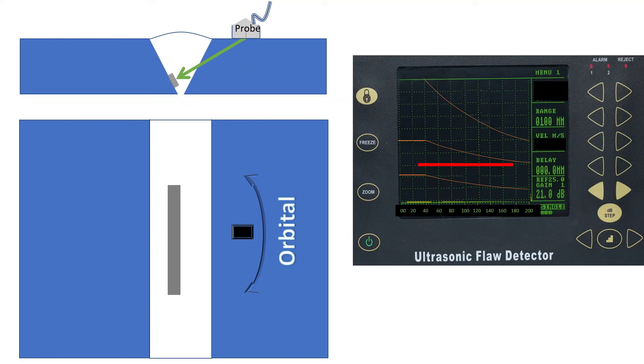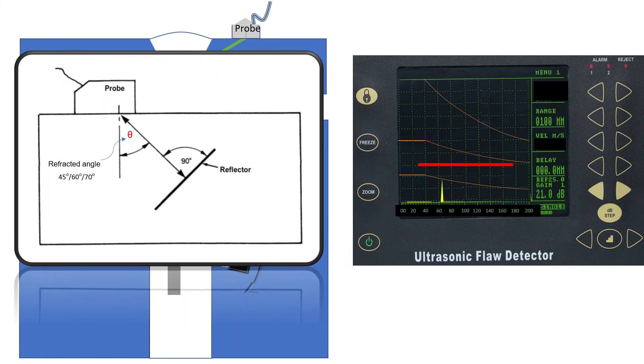The reason is that in lateral movement the sound beam remains perpendicular to the defect and amplitude held stable. However as the probe is swiveled, orbited or rotated as shown in the animation, the sound reflected angle changes and full echo response does not reach to the probe crystal. Eventually no response or low amplitude appears on the flaw detector display.